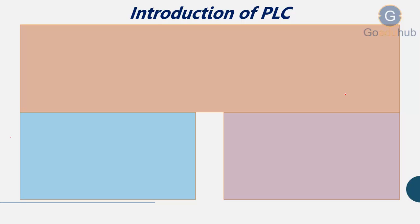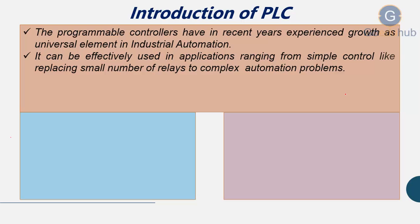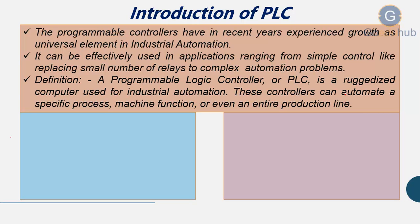As you know, PLC stands for Programmable Logic Controller. Programmable Logic Controllers have in recent years experienced growth as a universal element in industrial automation. It can be effectively used in applications ranging from simple controls like replacing a small number of relays to complex automation problems. If we go for the definition of a PLC, a Programmable Logic Controller or PLC is a ruggedized computer used for industrial automation.